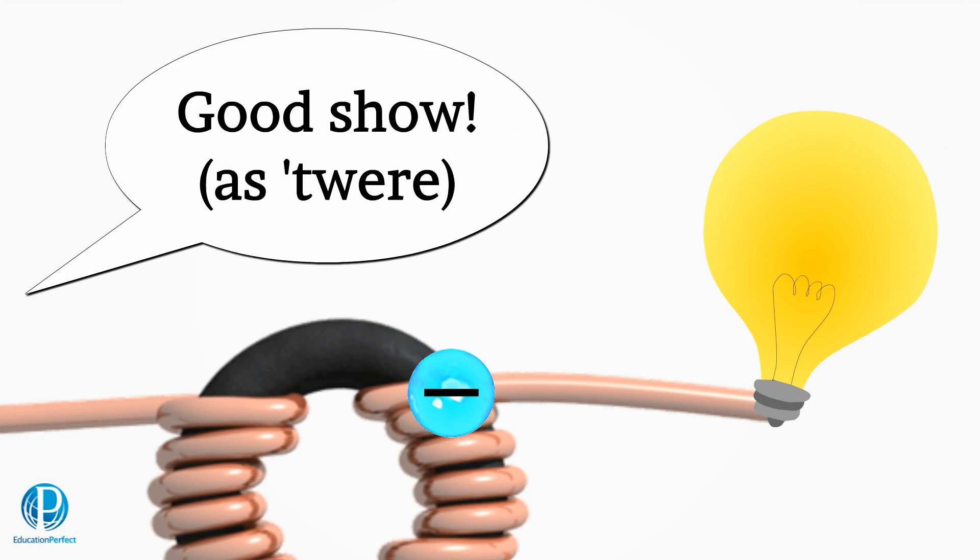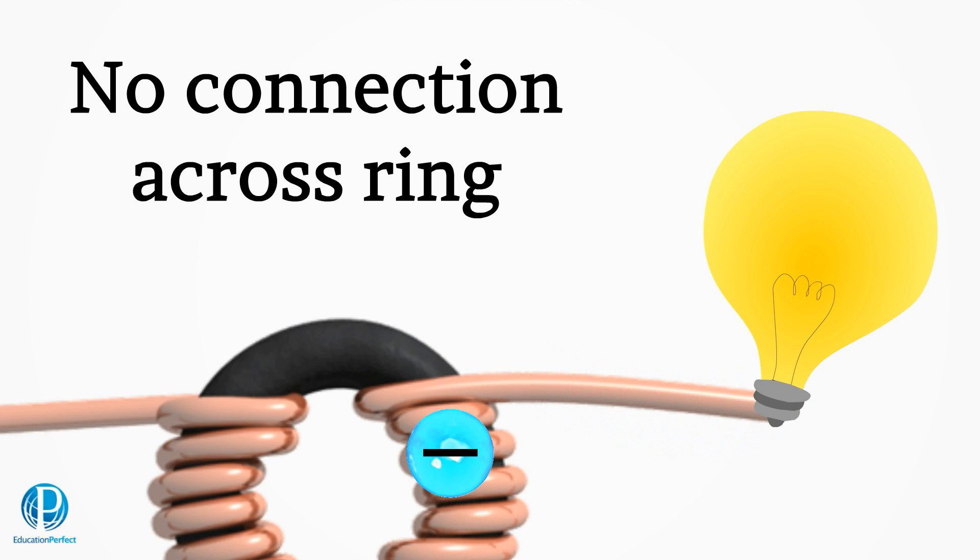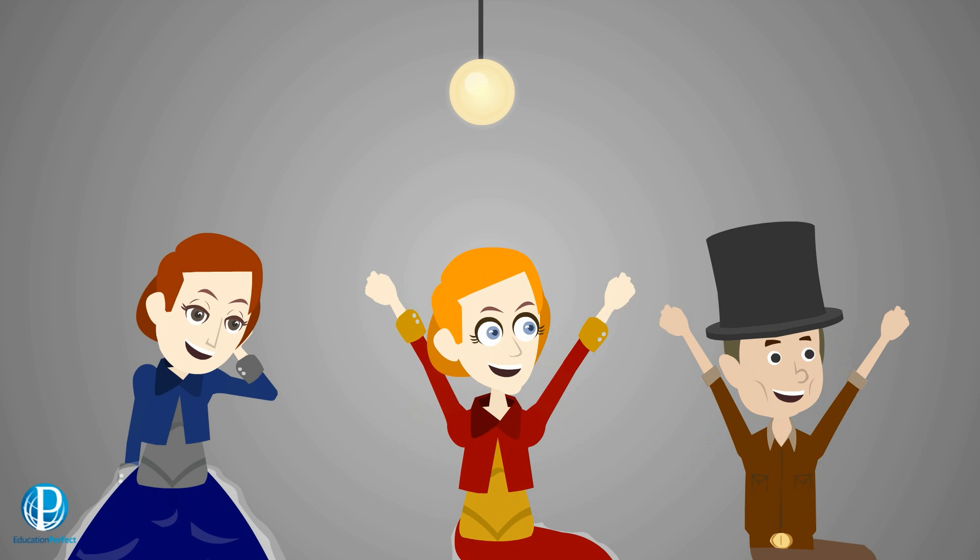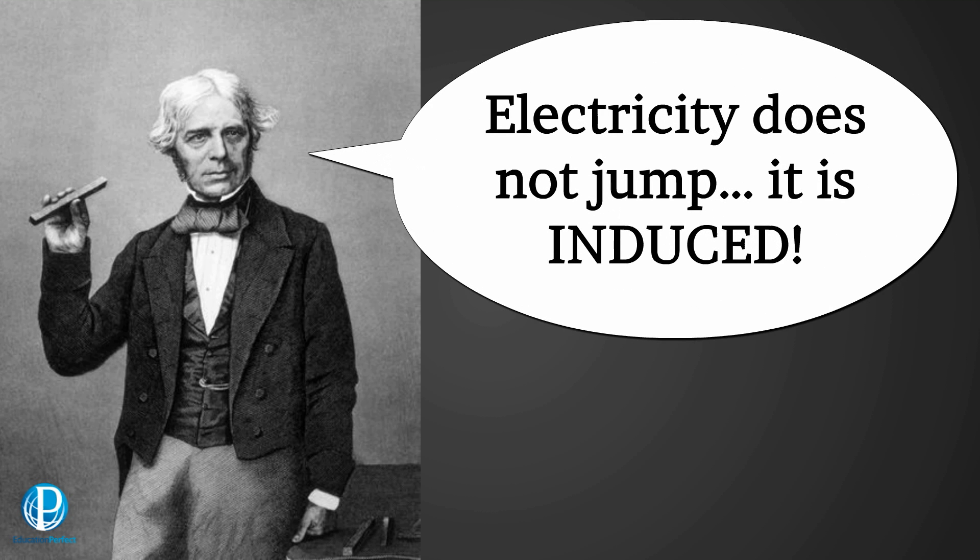Suppose the second coil was connected to a light bulb. For a second, the audience would have seen the bulb flash. The two coils were not connected to each other in any way. They were insulated, so no current flowed in the iron ring. So, how on earth did electricity jump from the first coil to the second one?